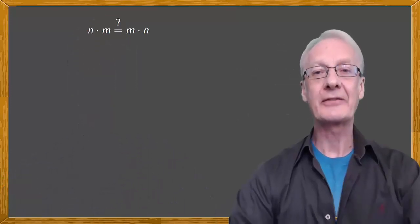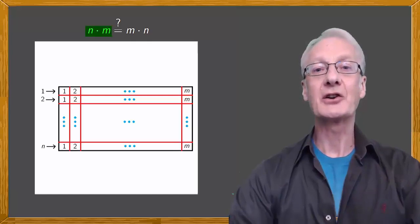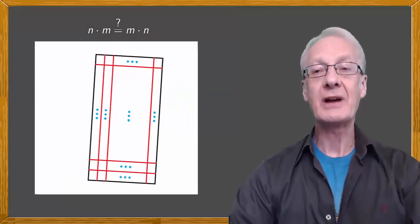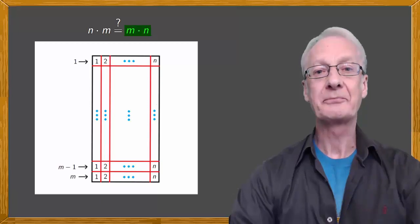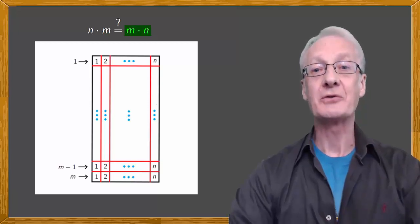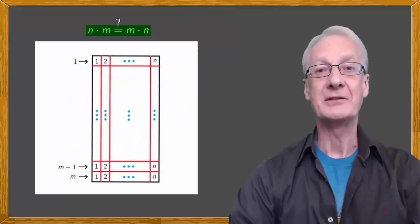You may have seen a graphic demonstration of this result. Look, here's a rectangular grid of n times m. And if you turn it around, the rectangular number it represents doesn't change. Here we have m times n. And so you can see visually that n by m is the same as m by n.